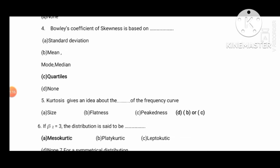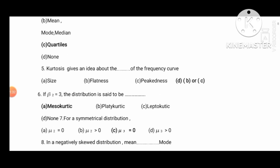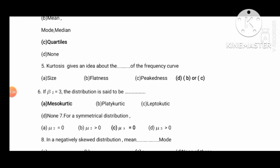This question gives you an idea about the shape of the frequency curve — the answer is both B and C. Regarding beta2: when the beta2 value equals 3, the distribution is said to be normal. This sixth question is very important.